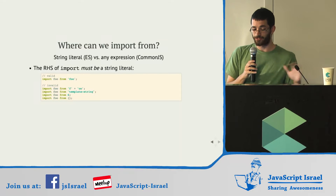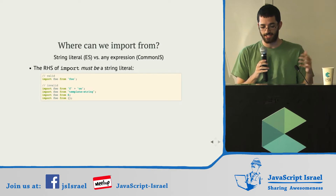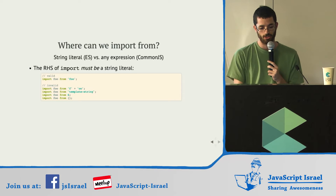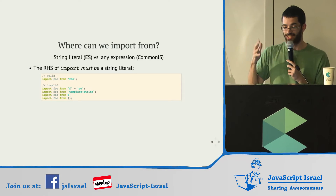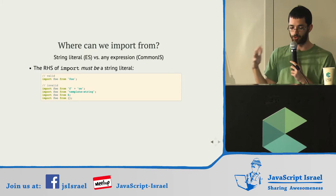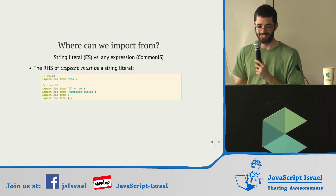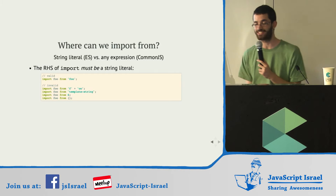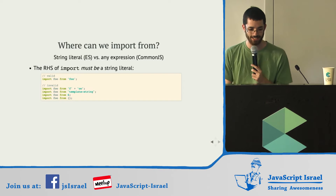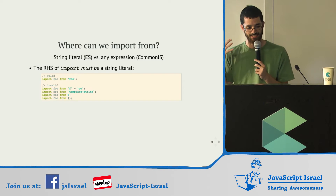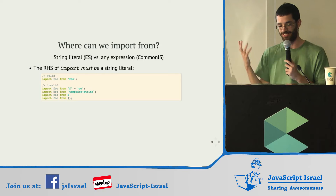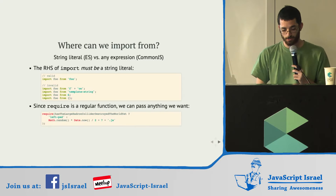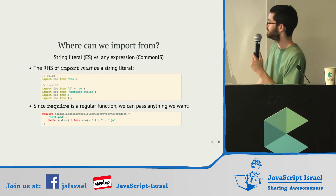Another thing: since import is a syntax, a keyword, the right-hand side of import has to be a string literal. It can't be a number, it can't be an assignment, it can't be a function call, it can't be a template string. It has to be a string literal. With require, since it's just a function, you can pass anything — you could even check if the Large Hadron Collider destroyed the world yet.